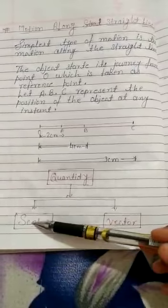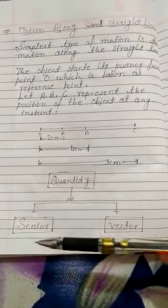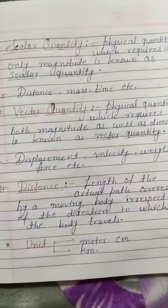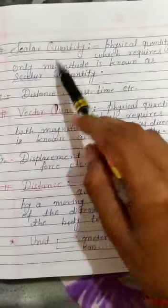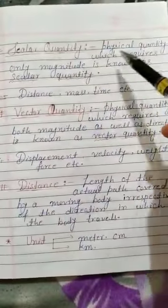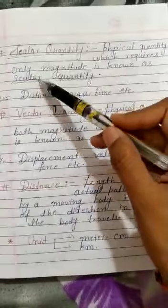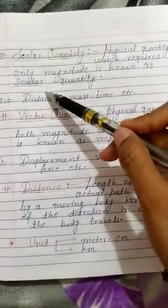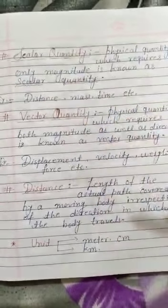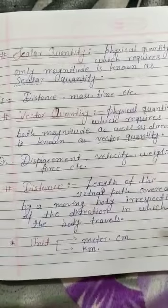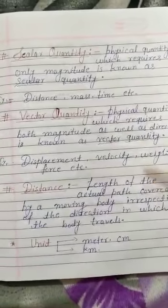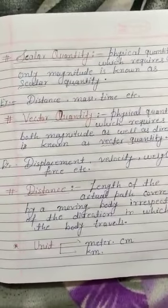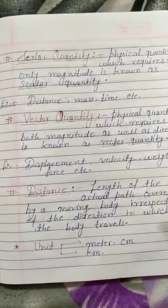These physical quantities have two types: first, scalar, and second, vector. First we will understand scalar quantity. Scalar quantity means a physical quantity which requires only magnitude. We are concerned only with the magnitude.